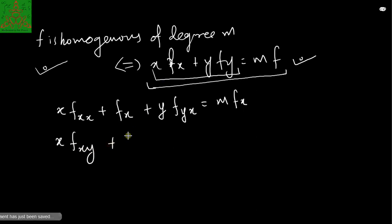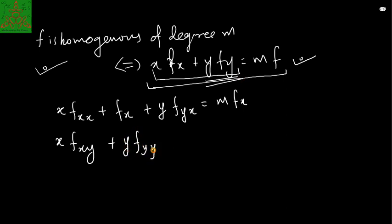If I differentiate this equation with respect to y, we'll have x·fxy plus y·fyy — since the derivative of fy with respect to y is fyy — plus fy, since the derivative of y with respect to y is 1, equal to m·fy.